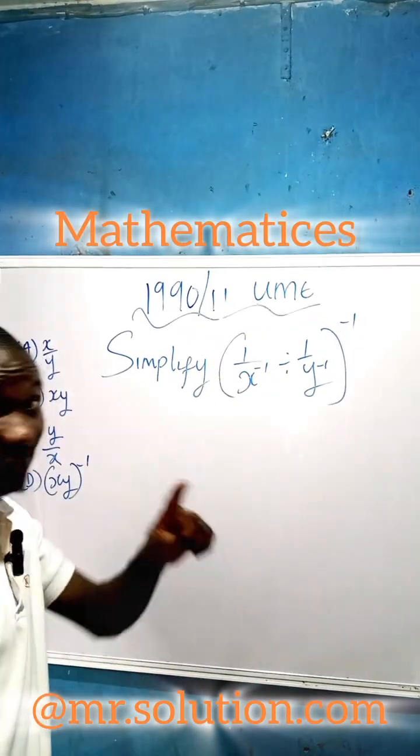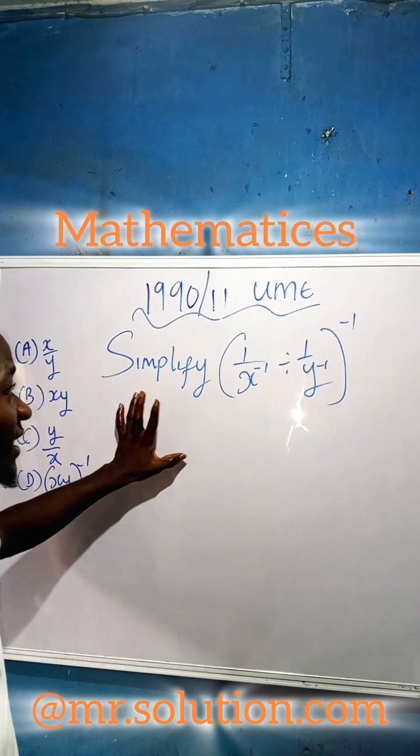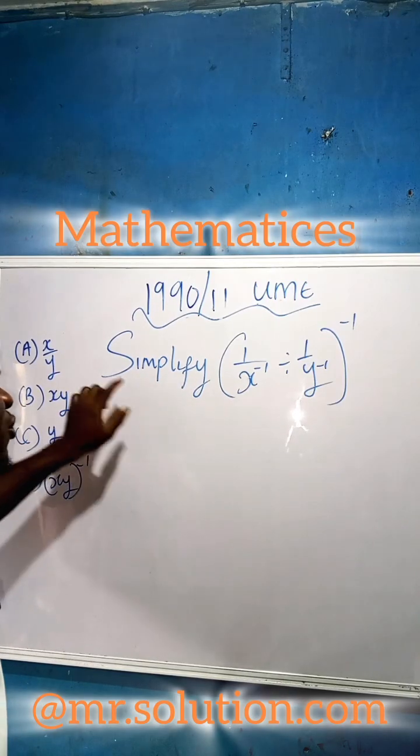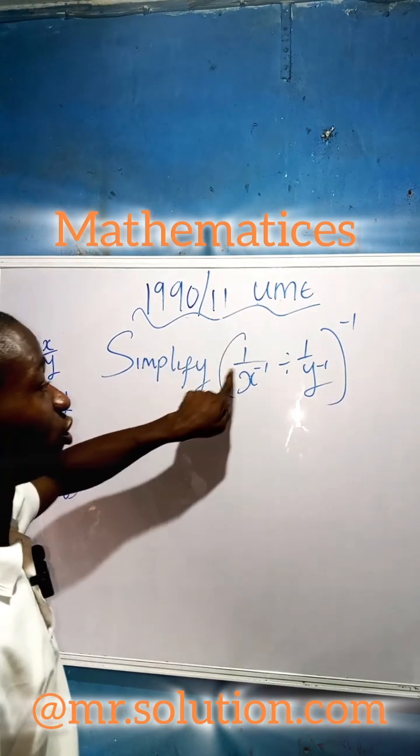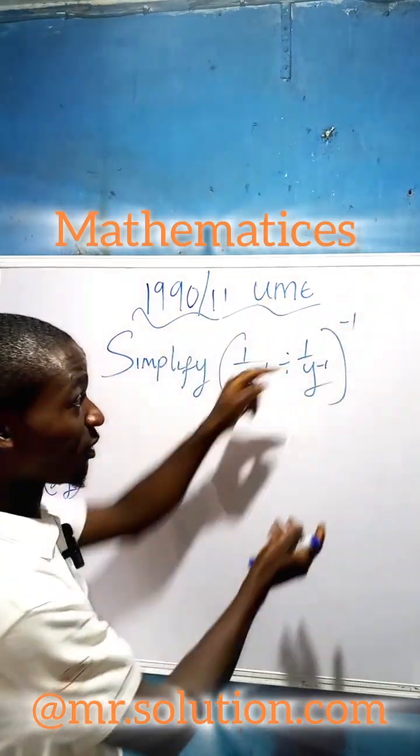Let us simplify this question. Listen carefully. We are asked to simplify one over x minus one, divided by one over x minus one, all to the power of negative one.